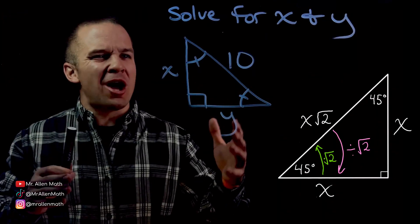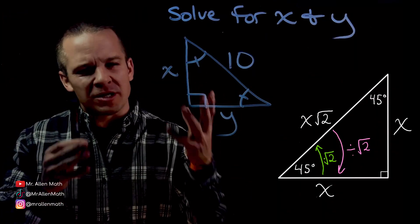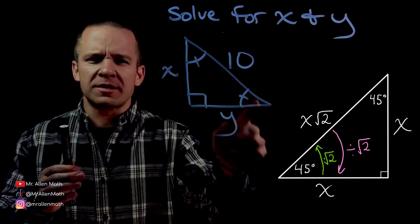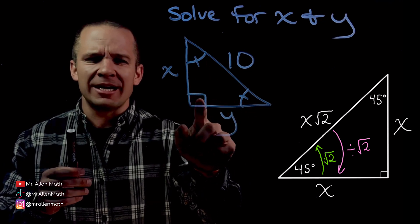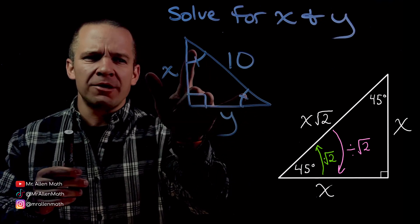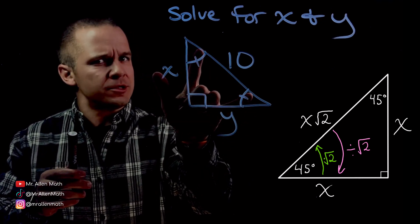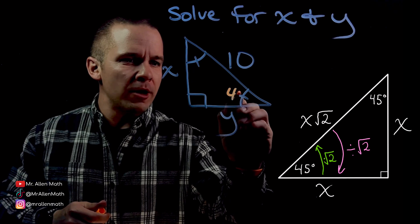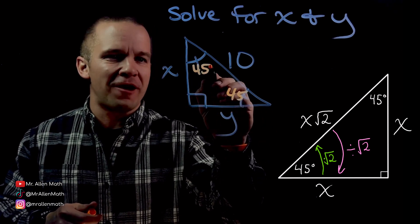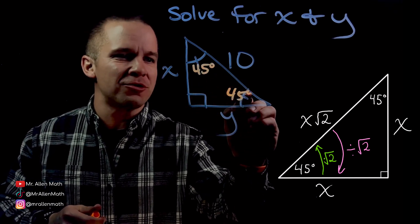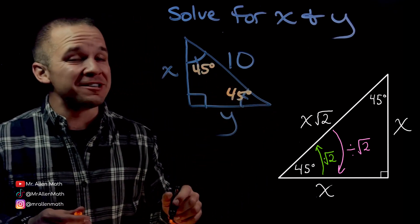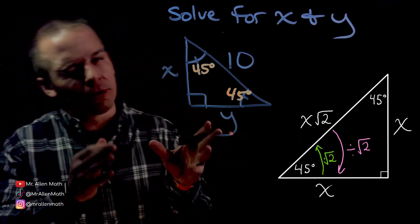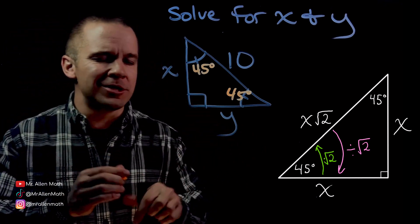I'm about to solve for X and Y in this triangle. What kind of triangle is this one? These two angles are the same, and that one's 90. So there are 90 degrees left over for these two, which means they are both 45 degrees. We have ourselves a 45-45-90 triangle, but it was in disguise — you've got to look for those things, like congruent sides.